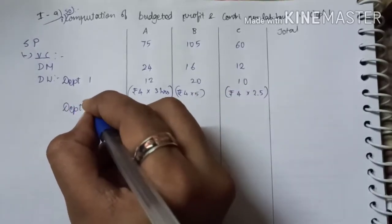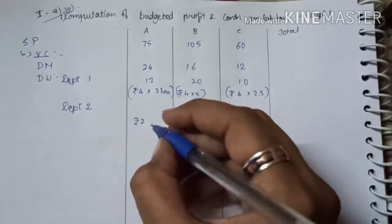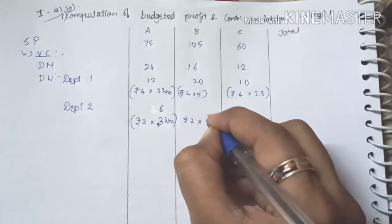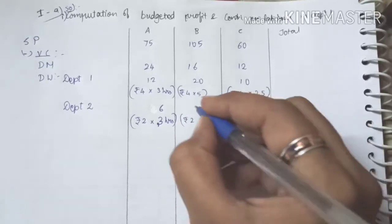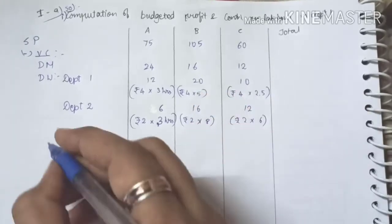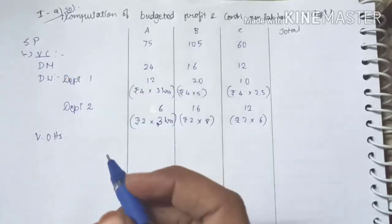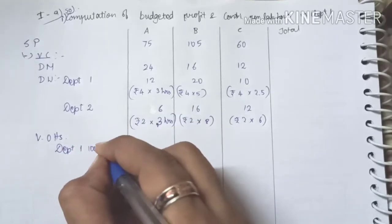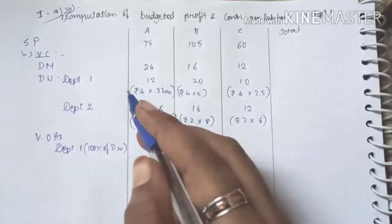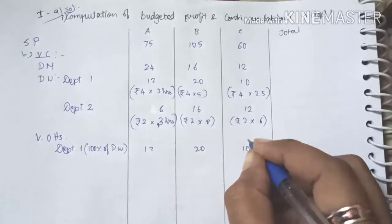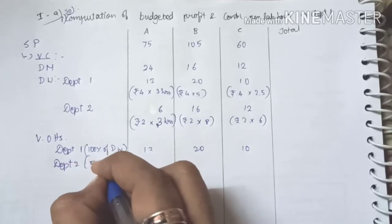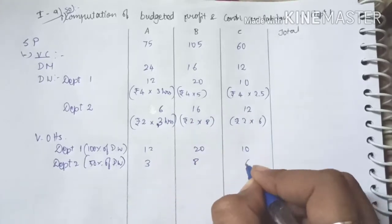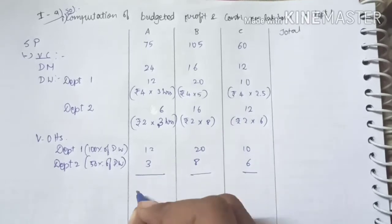Department 2 rate is Rs 2 per hour: Rs 2 into 3 hours = Rs 6, Rs 2 into 8 hours = Rs 16, and Rs 2 into 6 hours = Rs 12. Variable overheads: in department 1 it is 100% of direct wages, so 12, 20 and 10. In department 2 it is 50% of direct wages: 50% of 6 is 3, then 8 and 6 for the other products, giving 10 total for C.